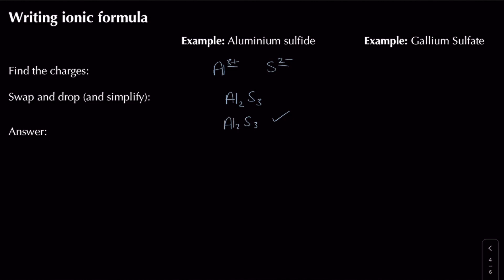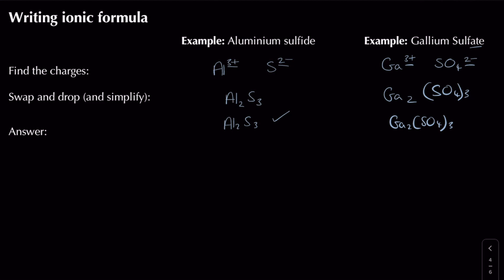For gallium sulphate: gallium is in group 3, so it's Ga3+. Sulphate ends in '-ate', so we know it's sulphur and oxygen: SO4 2 minus. Drop and swap: the 2 comes to gallium and the 3 comes to sulphate. There's a problem though - it would look like SO43. To make it clear you need to put brackets around the molecular ion sulphate, showing three lots of it. So the answer is Ga2(SO4)3.